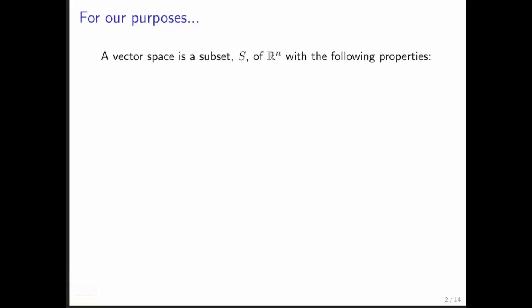For our purposes, a vector space is just a subset S of the set of all vectors with n components. But the set has some very special properties. First of all, the 0 vector must be in S.